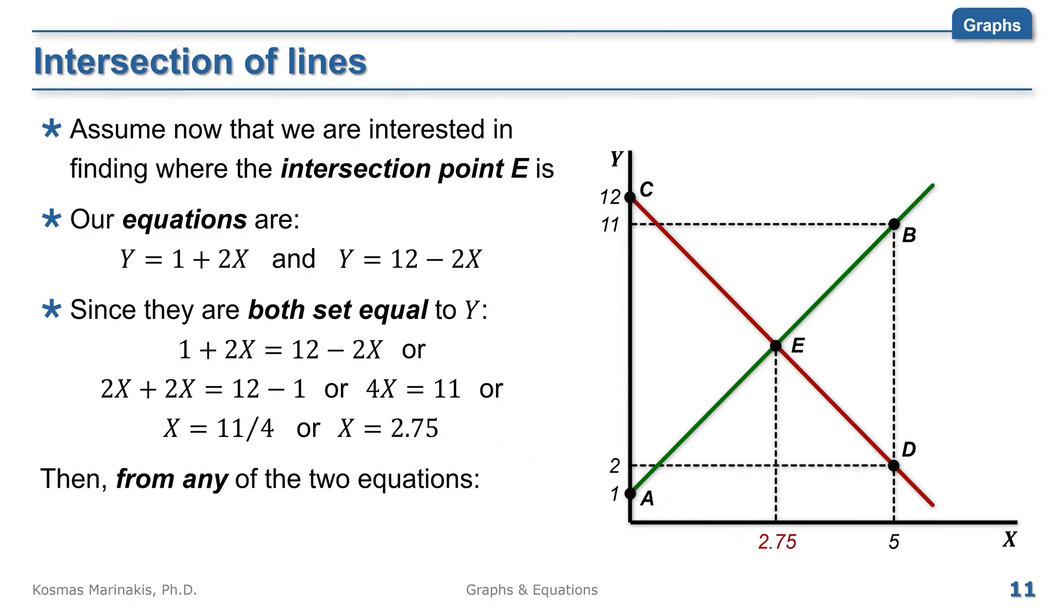Then, from any of the two equations, we can calculate the y that corresponds to x equals 2.75. I will use here the first equation, y equals 1 plus 2 times x. The x I found is 2.75.